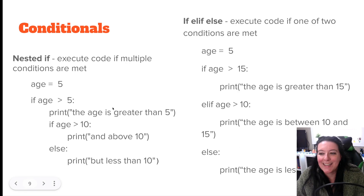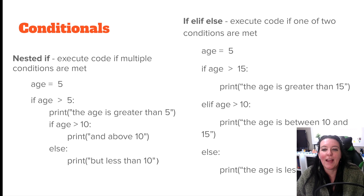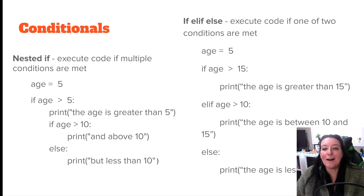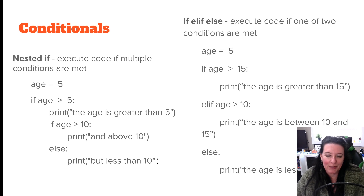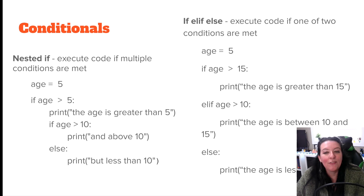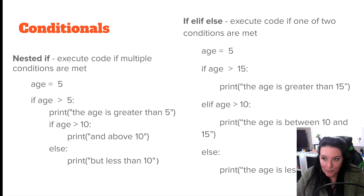We can also have nested ifs, where we run multiple conditional tests. We could say age equals five, then: if age is greater than five, print 'age is greater than five.' Then check if the age is also greater than 10 — if so, print 'and above 10.' So we have two ifs nested within each other. First check the first condition; if it's met, check the next condition. If the second condition isn't met, then do something else.